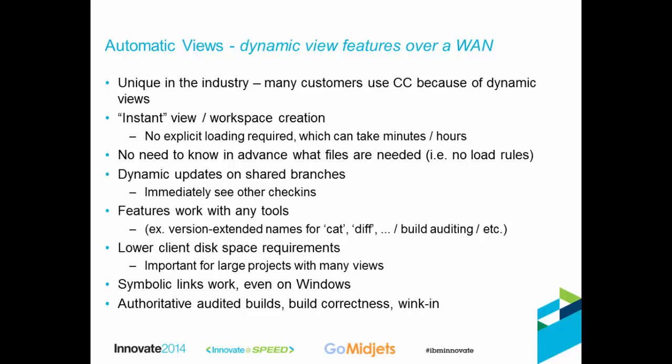Dynamic views also don't require that you know in advance which files you're going to need. With other view types — snapshot views and web views — you have to specify load rules to define the subset of VOBs your view will need, and then wait for those directory hierarchies to load before you can start work. Just like with dynamic views, automatic views won't require preloading of files. It will dynamically discover what files are needed as you wander through your file system.